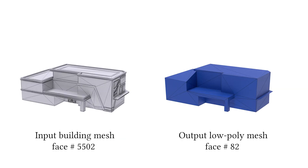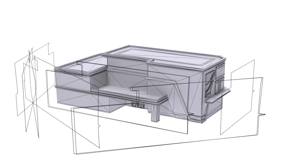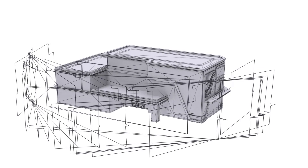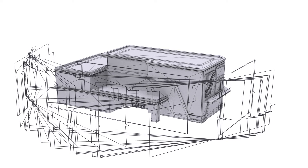In this work, we propose a novel algorithm to automatically convert high-poly 3D building models into both topologically and geometrically simple low-poly meshes. Given the input building model, we first pick the top K view directions and generate one silhouette for each direction.